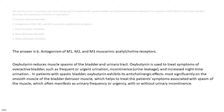The answer is b. Antagonism of M1, M2, and M3 muscarinic acetylcholine receptors. Oxybutynin reduces muscle spasms of the bladder and urinary tract. It is used to treat symptoms of overactive bladder, such as frequent or urgent urination, incontinence, urine leakage, and increased nighttime urination. In patients with spastic bladder, Oxybutynin exhibits its anticholinergic effects most significantly on the smooth muscle of the bladder detrusor muscle, helping to treat symptoms associated with spasm of the muscle, which often manifests as urinary frequency or urgency, with or without urinary incontinence.